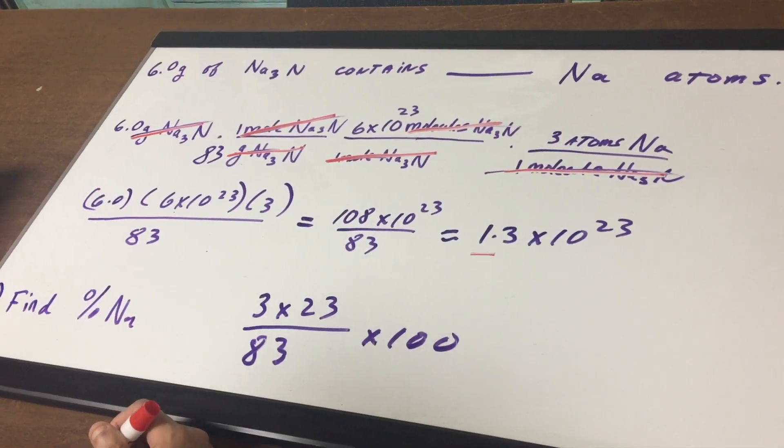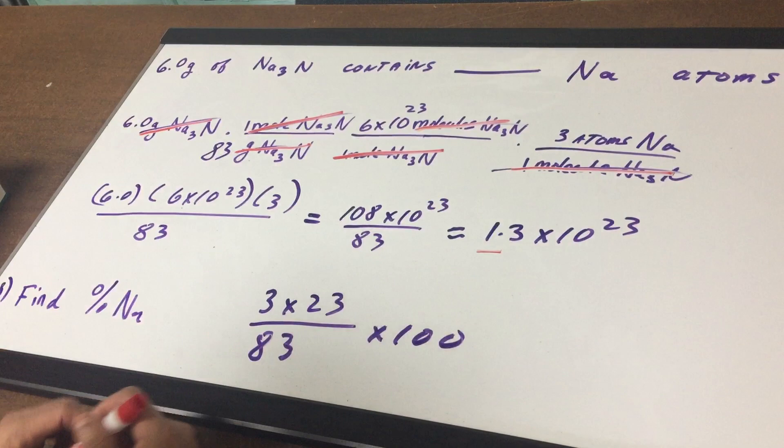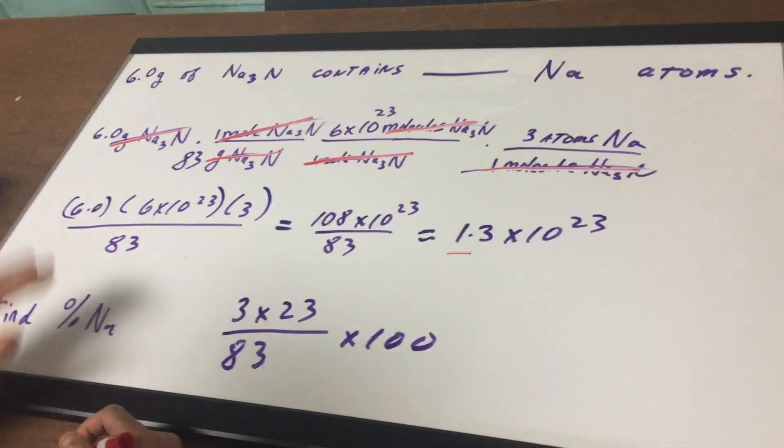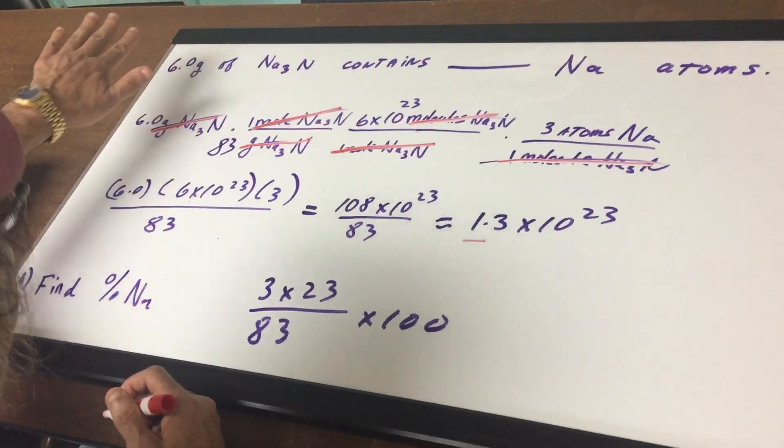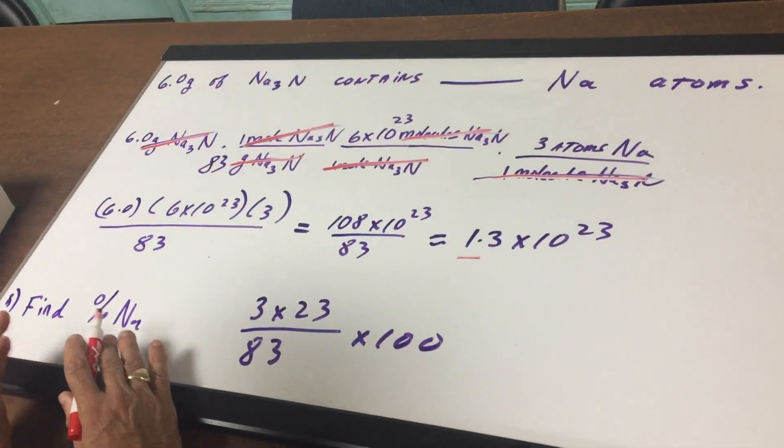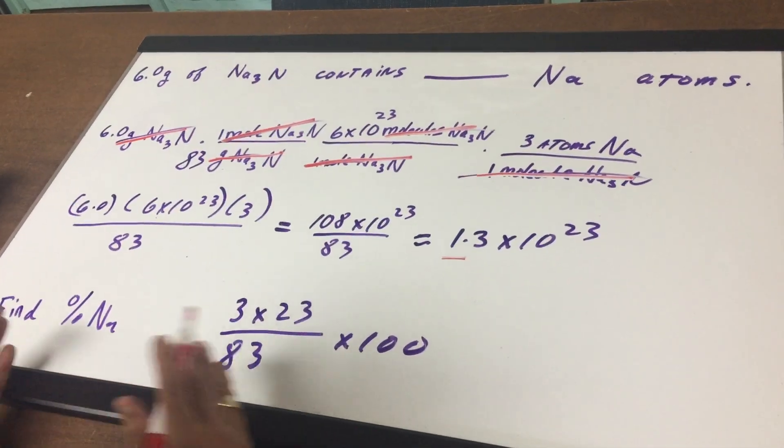Find the percent of sodium in this 6.0 gram sample. First of all, whenever you do percent composition, the grams don't matter. All we're going to do for percent of anything is the part over the whole times 100.